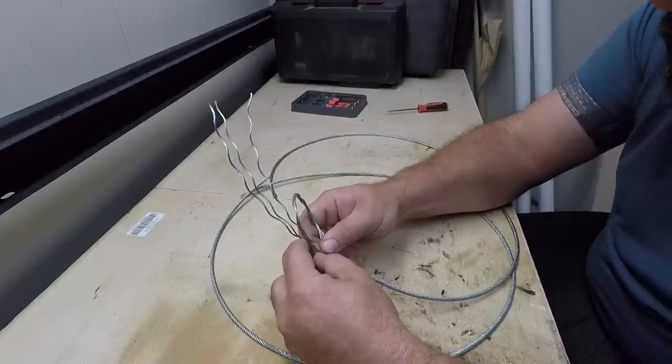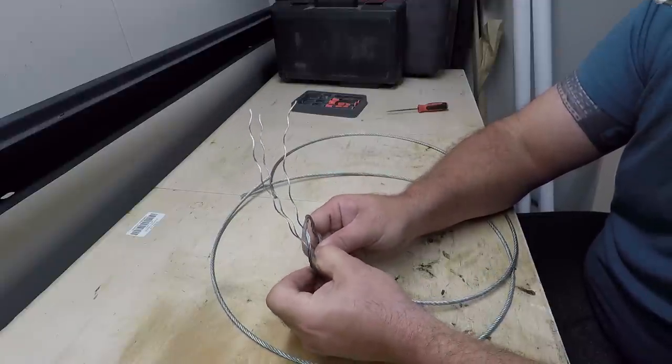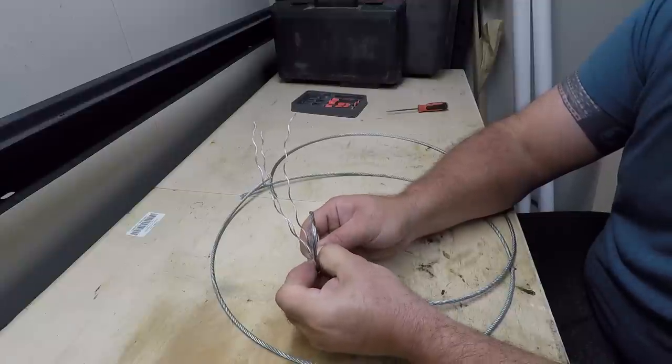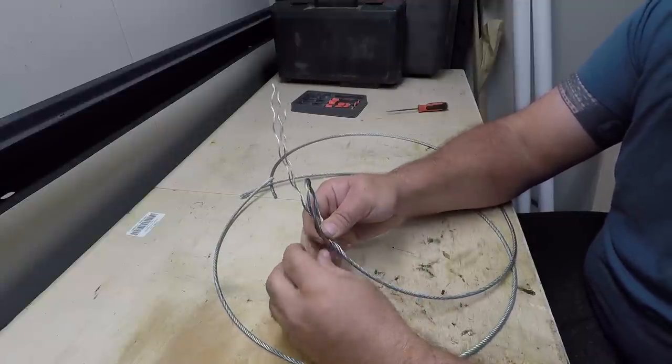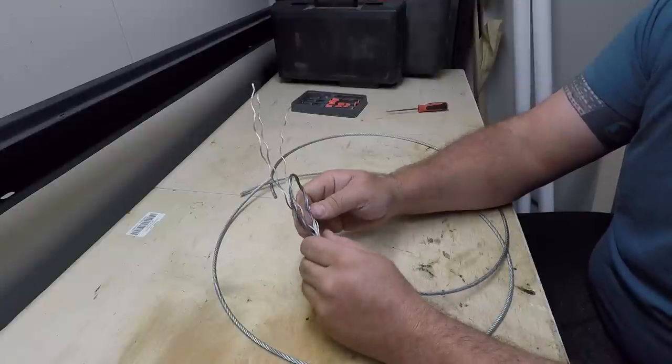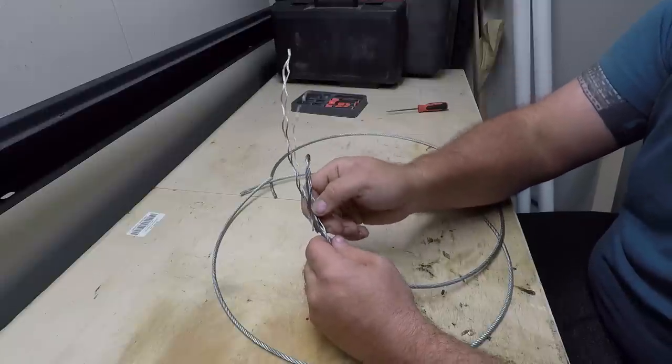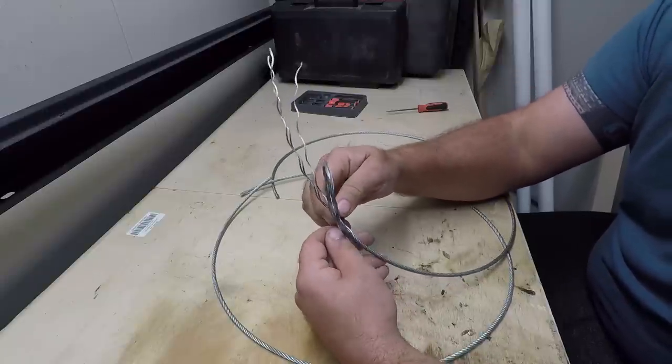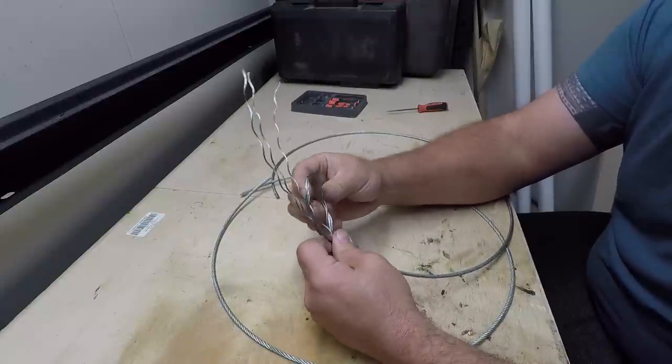Smaller ropes are a little more difficult to work with just in the simple fact that you don't want to kink it and it's pretty easy to kink. Now we got half our strands up one side of the rope, and this one actually needs to be adjusted a little bit but we should be able to work it around there pretty easy.